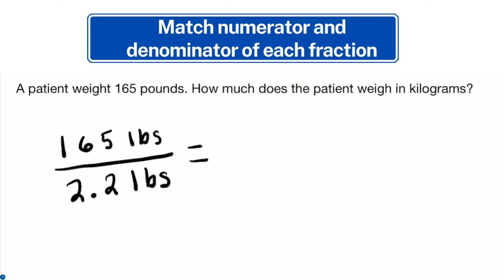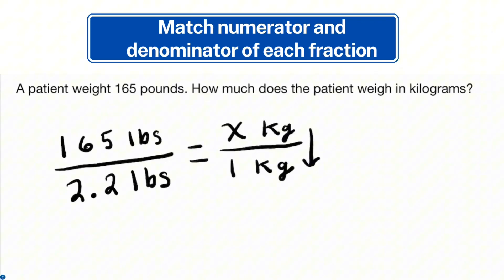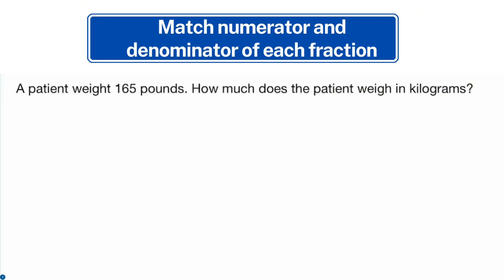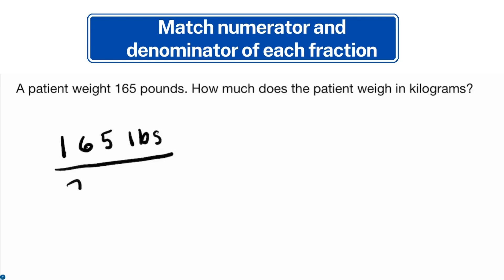We're dealing with pounds to kilograms. The conversion is 2.2 pounds equals 1 kilogram. So we set up the proportion as 165 pounds over 2.2 pounds equals x kilograms over 1 kilogram. Since we have the conversion memorized, we place those at the bottom, then solve for x. X equals 75 kilograms — meaning the patient weighs 75 kilograms.